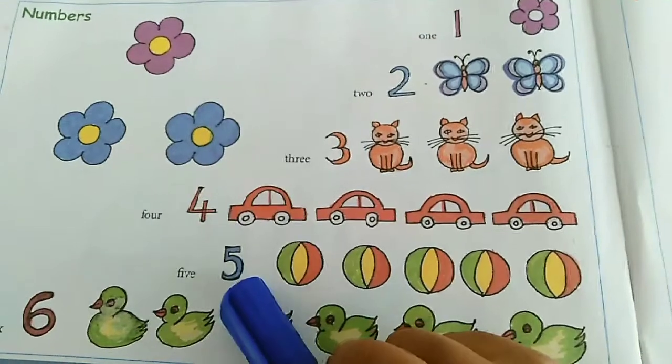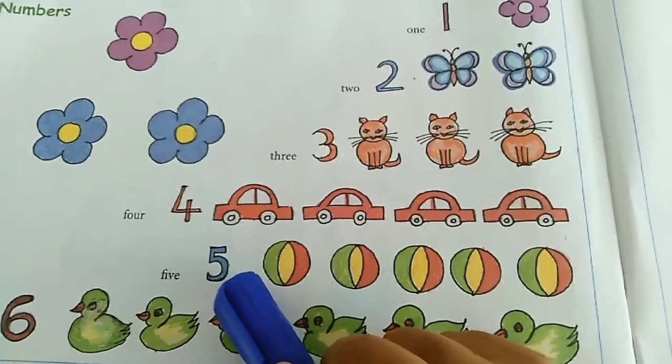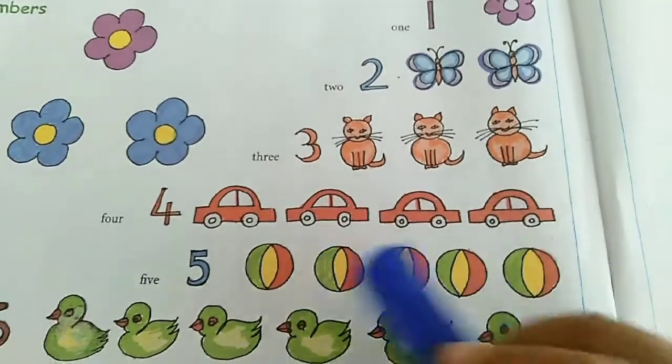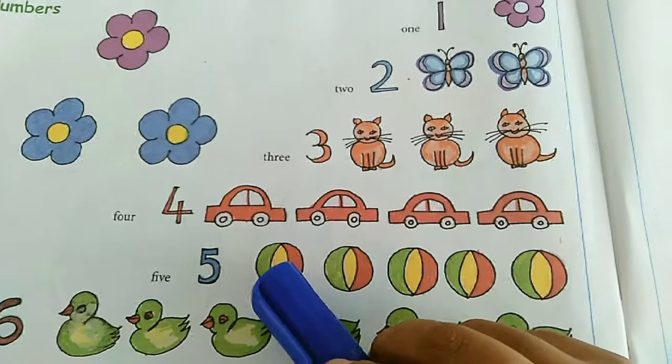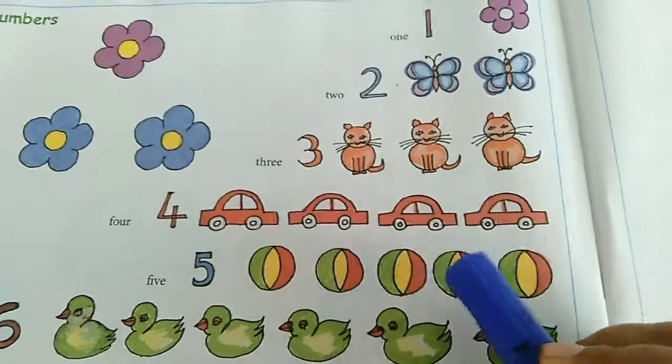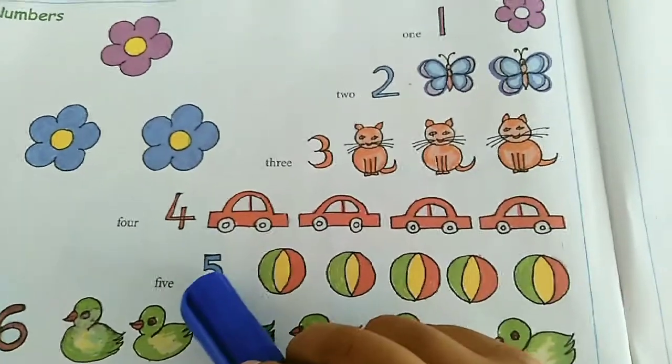Five. Five balls. Count and see. One, two, three, four, five. Good. Five balls. Good. Great.